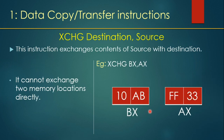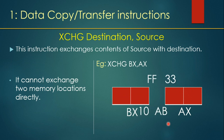The XCHG (exchange) instruction is a very powerful instruction required when you want to swap data between two registers. In the example, XCHG BX, AX will copy the data of BX to AX and the data of AX to BX. It uses a temporary register internally to do this, and you can see the data getting transferred after execution of the instruction.